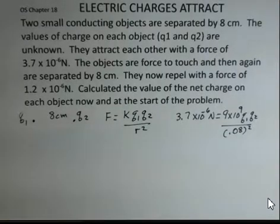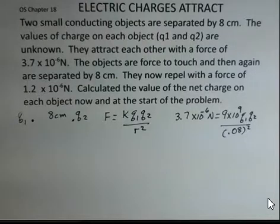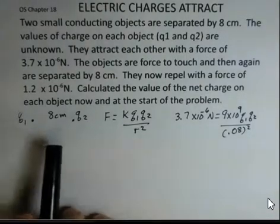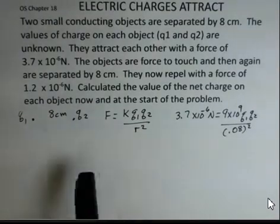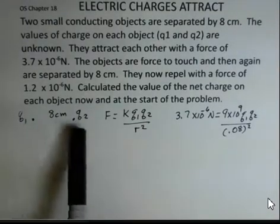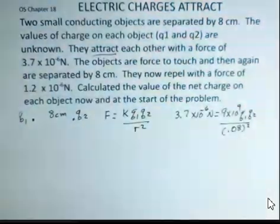An electrostatics example here, where we have two charges. We won't say how they're fixed at these locations, but they're there, not moving. Electrostatics. And they're small metal objects separated by 8 centimeters. The individual charges are unknown, but we're told they're attracting each other.